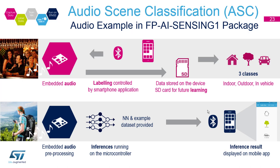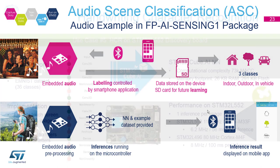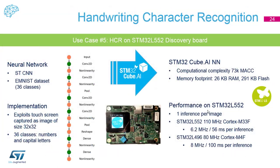For the audio scene classification demo, we also recorded data internally and the model can listen to audio and tell you whether you're indoors, outdoors, or in a vehicle. The pre-processing used is the log mel spectrogram — an FFT followed by the mel filter bank — so the signal looks more similar to what your ear can hear. For keyword spotting or trigger word detection, you would instead use something like MFCC.